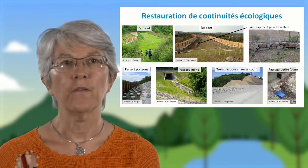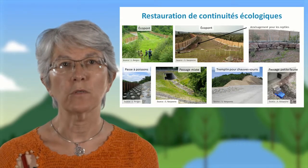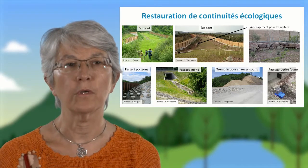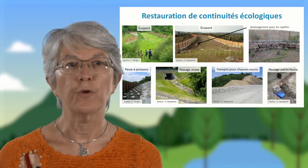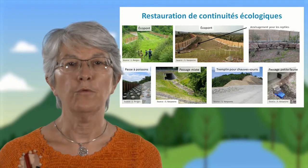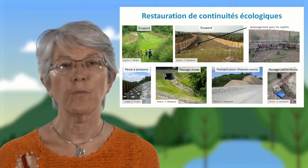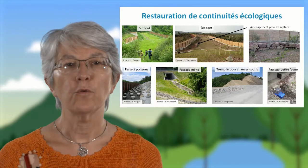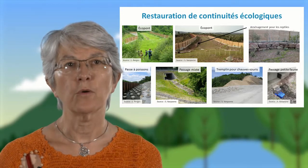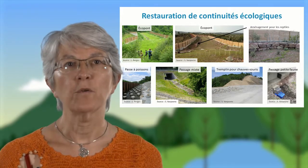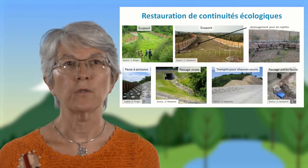En termes de restauration, ce qui a beaucoup été fait, c'est restaurer des continuités au travers de grandes infrastructures de transport qui avaient été conçues dans les années 60 sans prendre en compte les besoins de déplacement de la faune. Voici deux exemples d'éco-ponts, des ponts dédiés au passage de tout type de faune, avec pour celui du Var, un aménagement particulier pour les reptiles, parce que c'était un enjeu important sur ce secteur. On voit aussi différents aménagements concernant les restaurations de continuité aquatique, avec une certaine avance prise sur ces milieux, puisque la directive cadre sur l'eau a imposé depuis des années de restaurer les continuités.